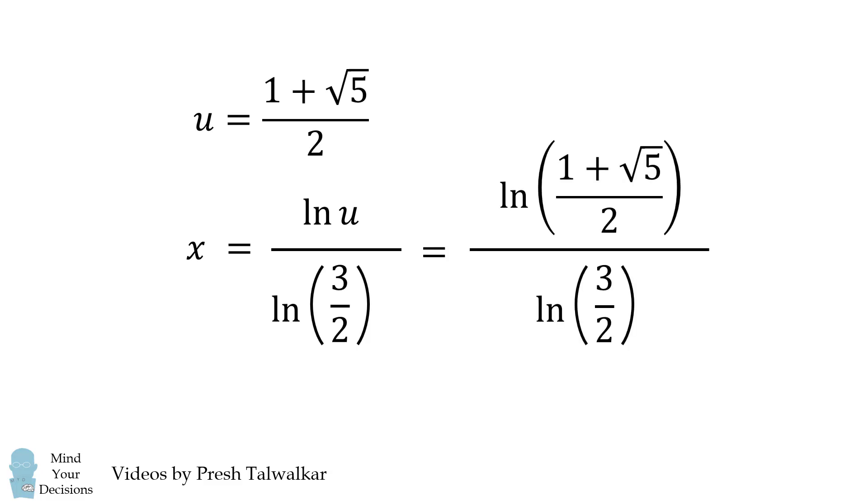We substitute in for u, and we get our exact answer. x is equal to the natural log of the golden ratio divided by the natural log of 3 halves. And this simplifies to be approximately 1.187.